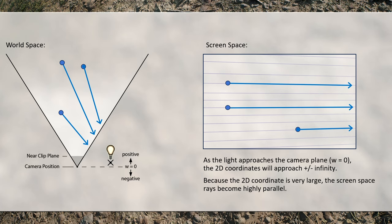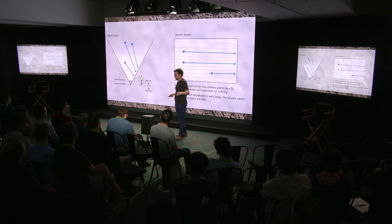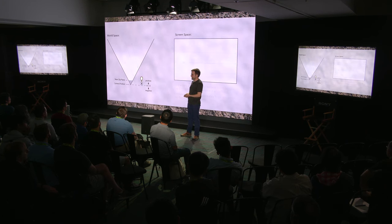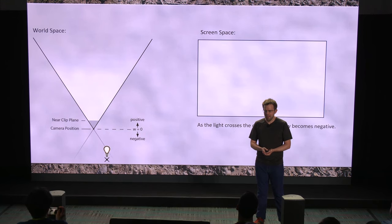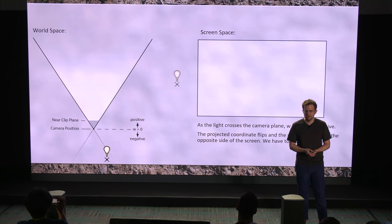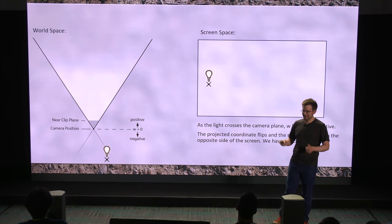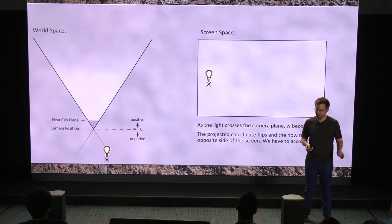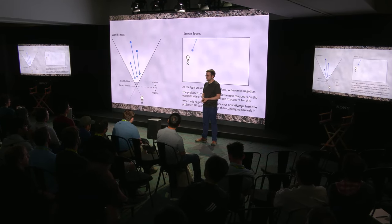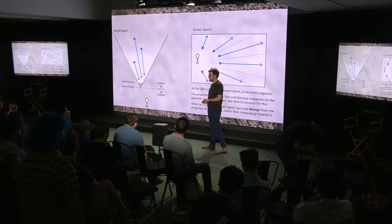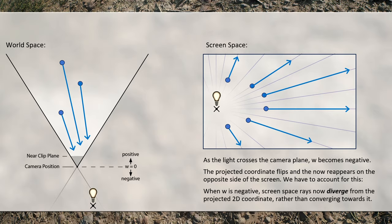What happens when things go beyond the camera plane? This is observation number three. If we push the light behind the camera plane, W flips to being negative, and the light reappears on screen on the opposite side. Coordinate systems being what they are, this is actually great — observation number three, the unintuitive one, is that we no longer interpolate towards the light; we interpolate away from it. This guarantees you're still tracing a correct ray in screen space. Knowing these three things, we can very easily implement our algorithm.